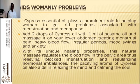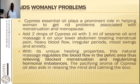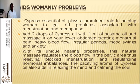Cypress essential oil is used for women's problems. It plays an important role in helping women get rid of problems associated with menstruation and menopause. Add two drops of cypress oil with 1 ml of sesame oil and massage it on your lower abdomen, treating menstrual pain, heavy blood flow, irregular periods, mood swings, and anxiety. This natural massage regulates blood flow in the pelvic area, thus relieving blocked menstruation and regularizing hormonal imbalances. The pacifying aroma of cypress oil also helps in relaxing the mind and calming the soul.